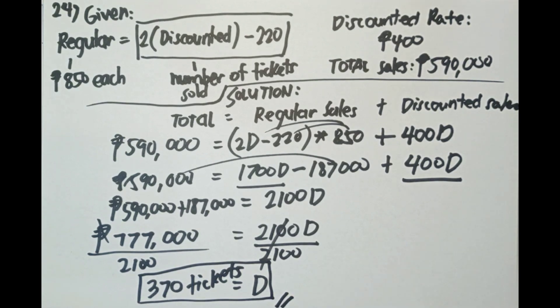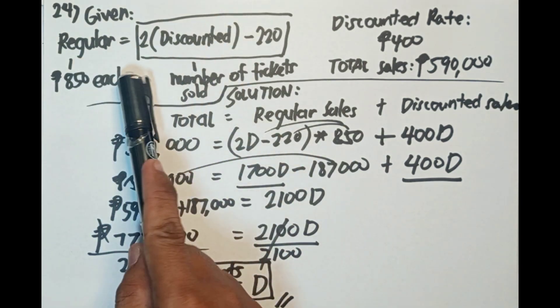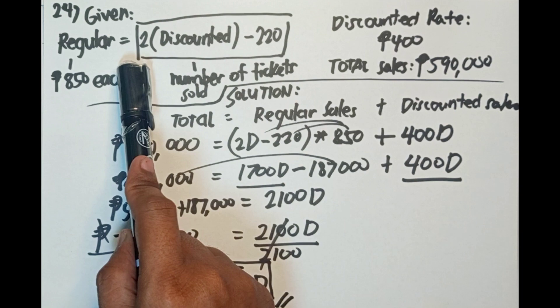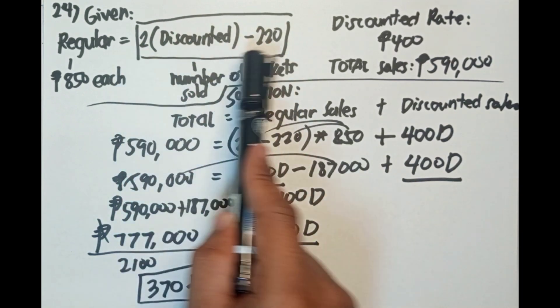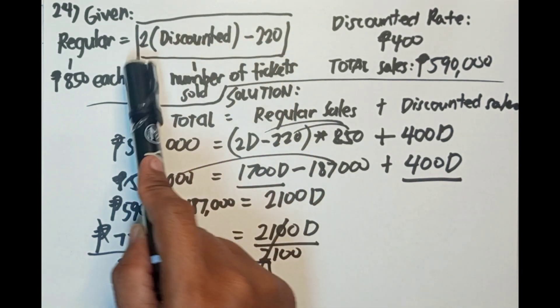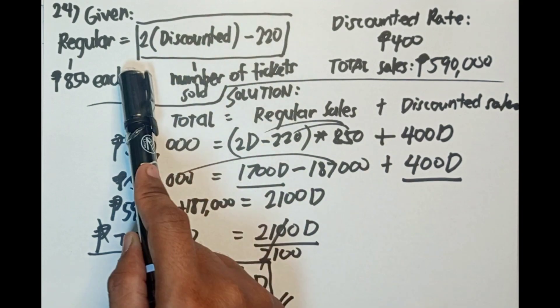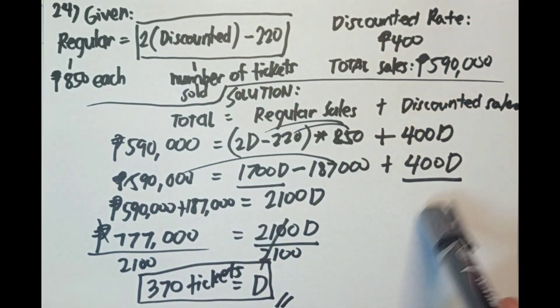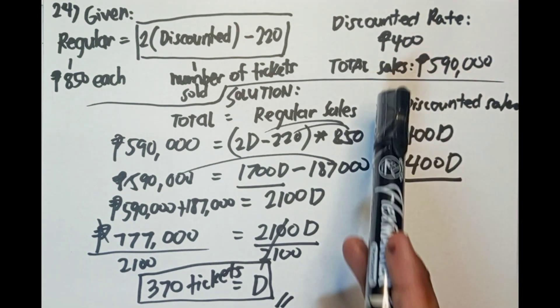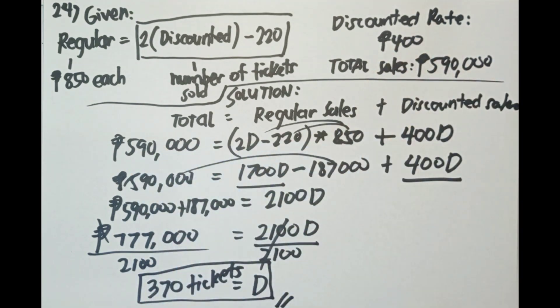Una, bring down muna natin yung mga given. Yung fab sabi doon, 220 less than twice. Less than twice, working backwards yun. Less than twice the discounted rate. 2 times discounted minus 220. Tapos yung discounted 400, total sales. Substitution dito. Tapos nakuha natin yung 370. The final answer is, there are 370 tickets sold at the discounted rate. So kahit 370 lang. Para mas sure, 370 tickets.